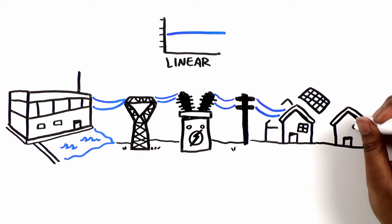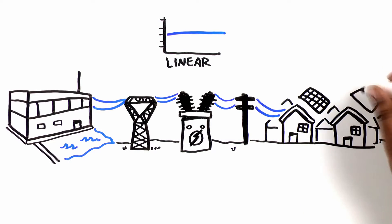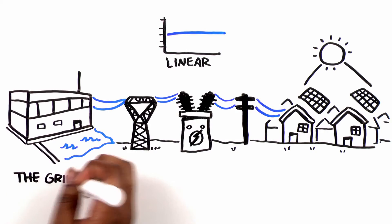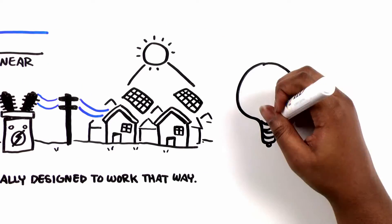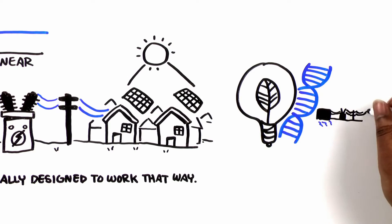Now some of our customers themselves are producing energy and our energy resources are more diverse. However, the grid was not originally designed to work that way. So, as renewable energy evolves, the grid must too.